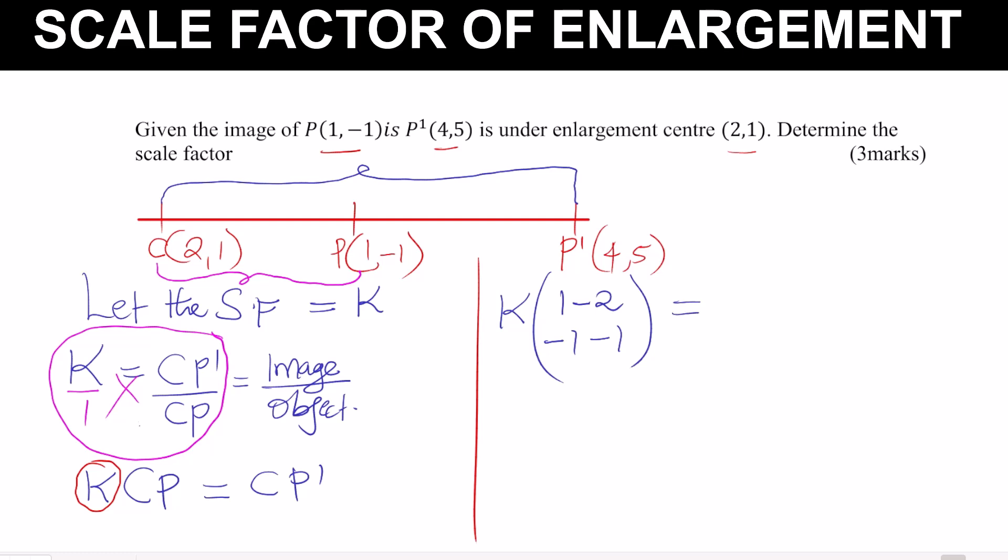The image displacement CP' starts with P'. The x-coordinate of P' is 4, subtract the x-coordinate of C which is 2: giving 4 − 2. The y-coordinate of P' is 5, subtract the y-coordinate of C which is 1: giving 5 − 1. So CP' = (2, 4).